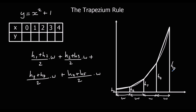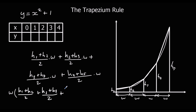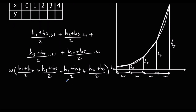So how can we simplify this? h1 is multiplied by the width, so if I take that width out, that leaves me with (h1 + h2)/2 + (h2 + h3)/2 + (h3 + h4)/2 + (h4 + h5)/2. We can simplify that even more by expanding all the halves.